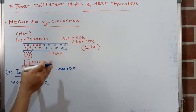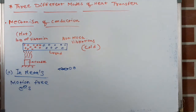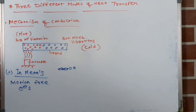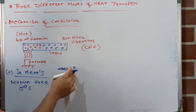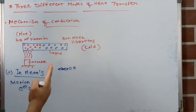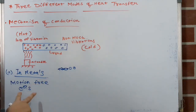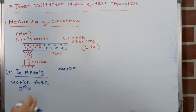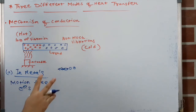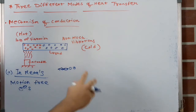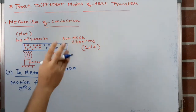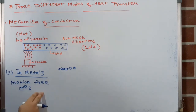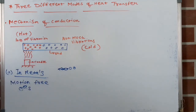Because the number of free electrons in metals is more, the motion of these free electrons is responsible for the conduction of heat in metals. In metals we have two different modes of heat transfer: due to the motion of free electrons, and due to lattice vibrations. Therefore, we can say that metals are good conductors of heat due to these two modes.